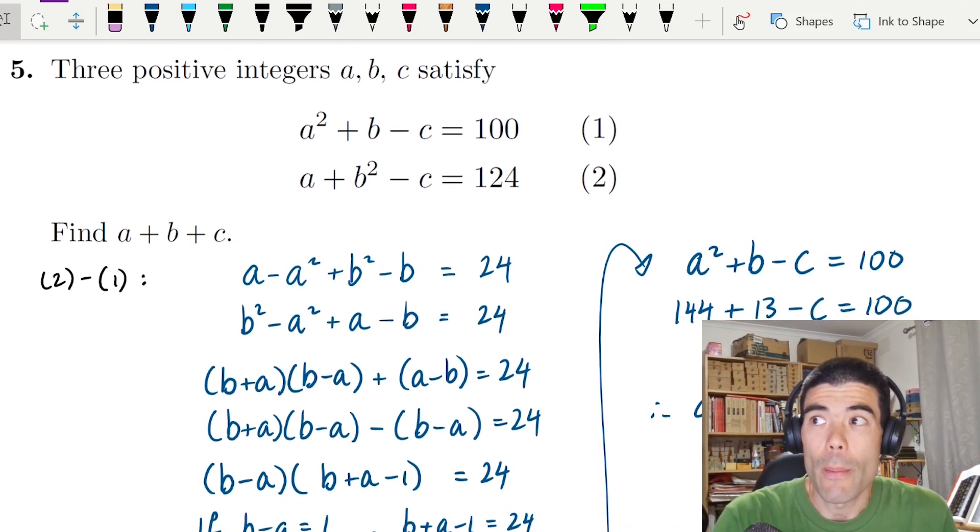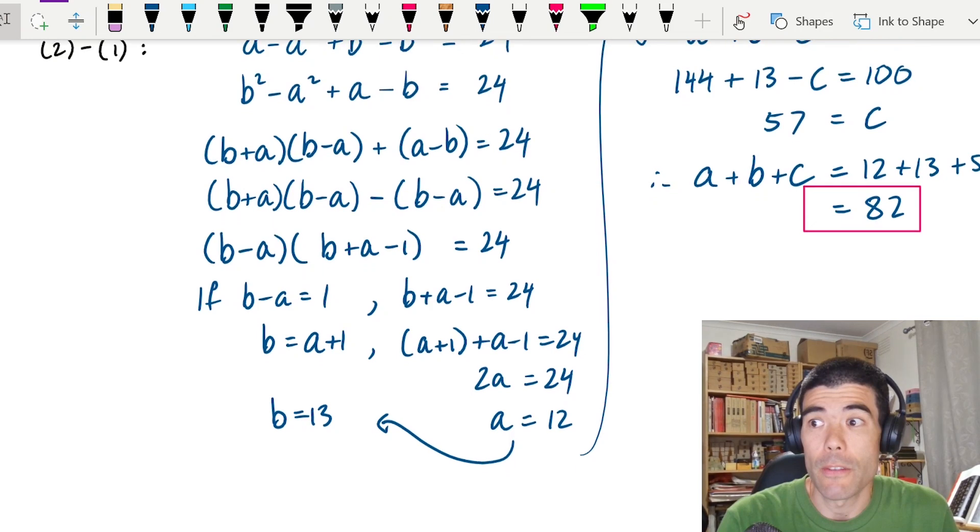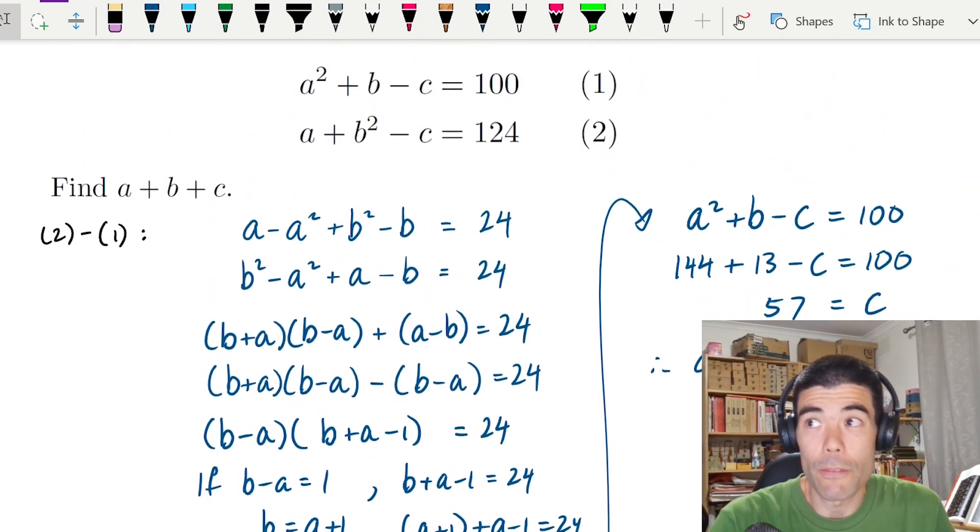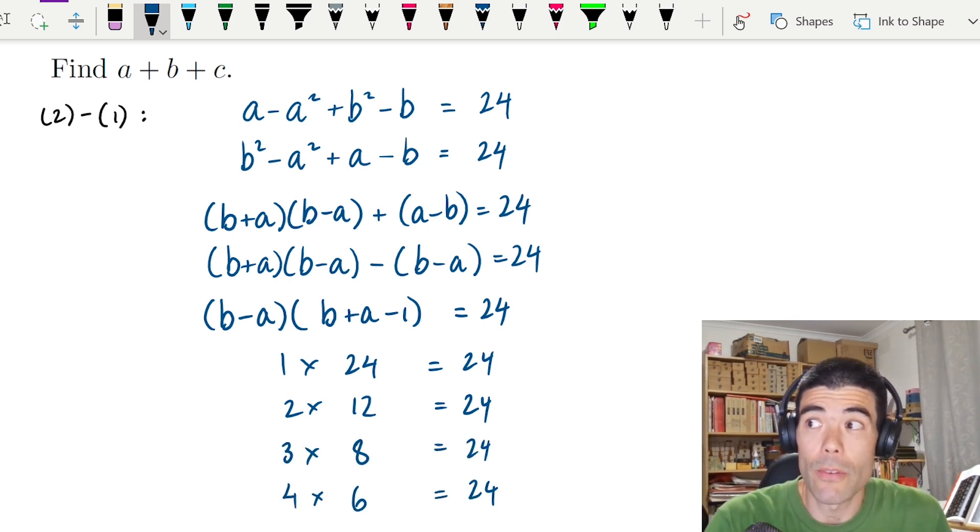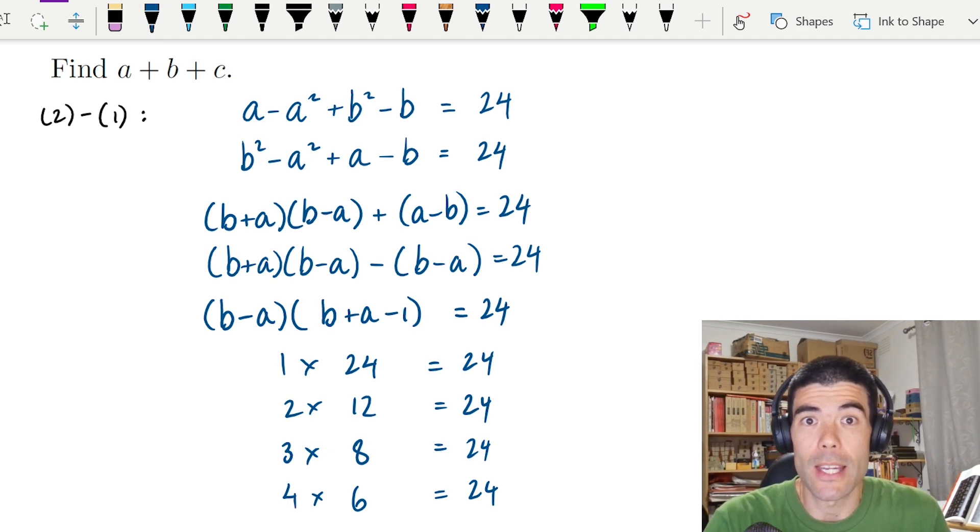But we could, to be a bit more thorough, go back and check those other three cases for the factors of 24. What you would find if you do that is that b and a cannot satisfy those equations while also being positive integers. The only possibility is the one we've found already where a plus b plus c is 82.